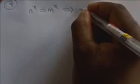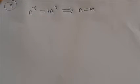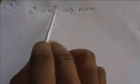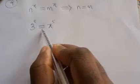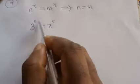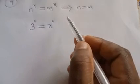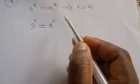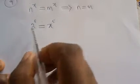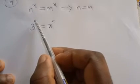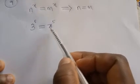Law number 9: if x raised to power n equals y raised to power n (same power, different bases), it simply implies that x equals y. Because the equality sign says both quantities are equal, and the powers are identical, so the bases must be equal.